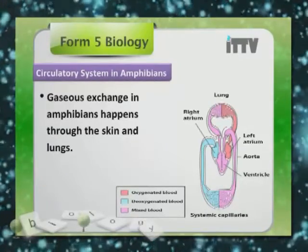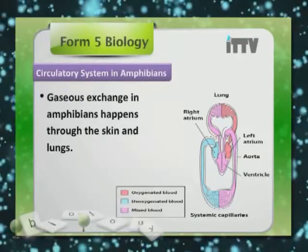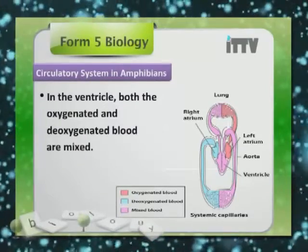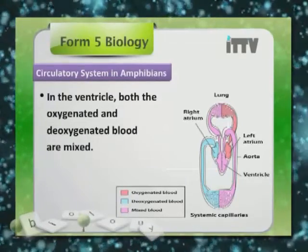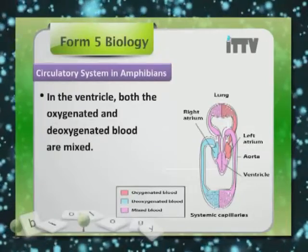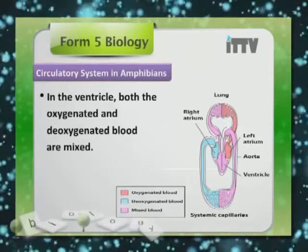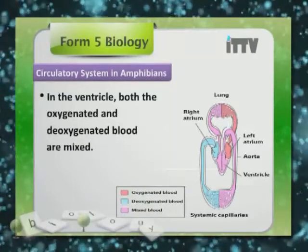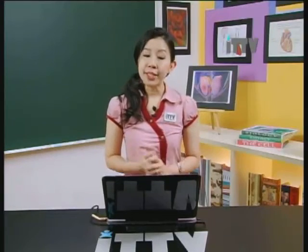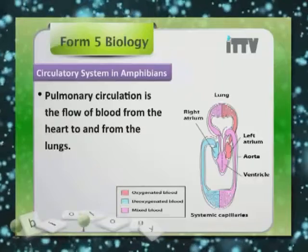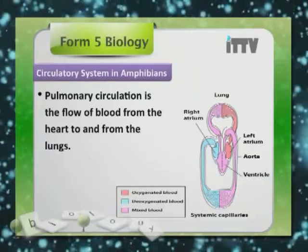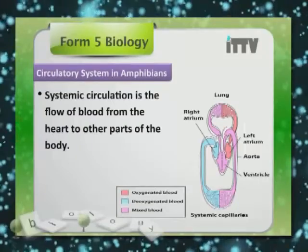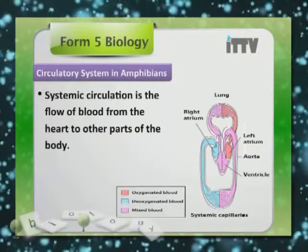Gaseous exchange in amphibians happens through the skin and the lungs. In the ventricle, both oxygenated and deoxygenated blood are mixed. The pulmonary circulation system is the flow of blood from the heart to the lungs, whereas systemic circulation is the flow of blood from the heart to other parts of the body, to the different tissues.